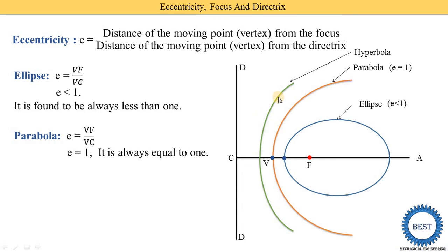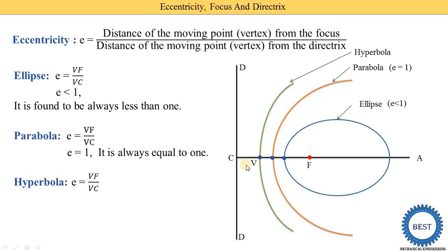For the hyperbola, we draw a green curve and locate the vertex V. The eccentricity is greater than 1. Using the same definition: VF is larger compared to VC. So VF / VC gives a value greater than 1. For example, if VF is 2 and VC is 1, E = 2. If VF is 6 and VC is 2, E = 3. So eccentricity is always greater than 1 for the hyperbola.